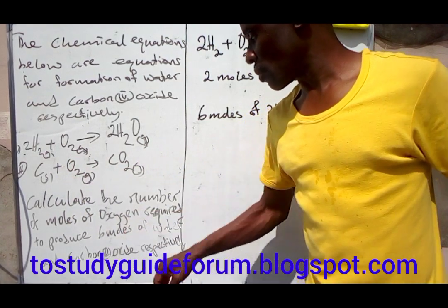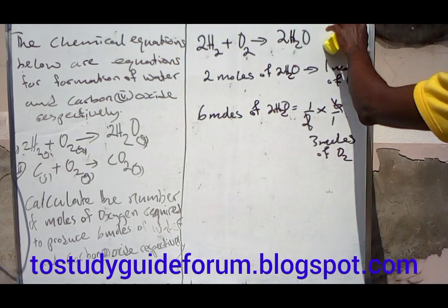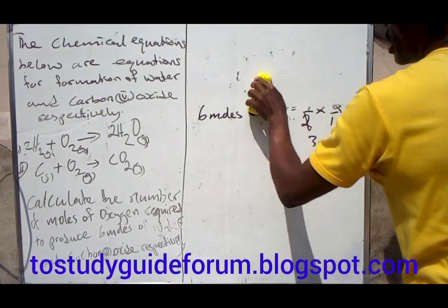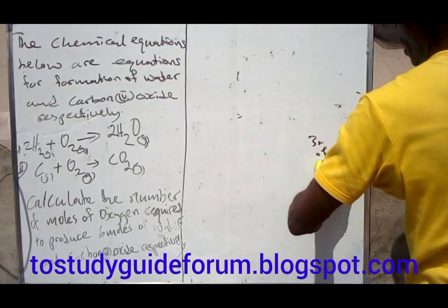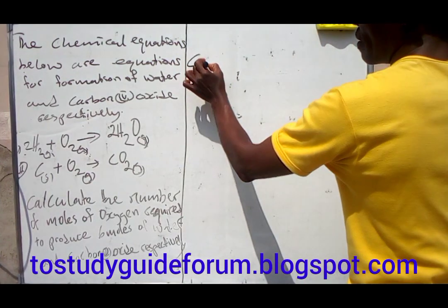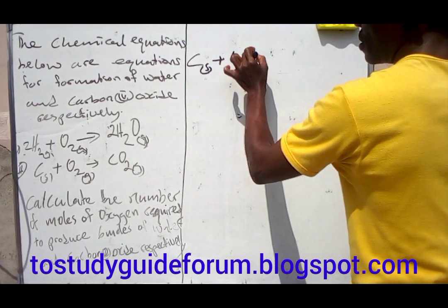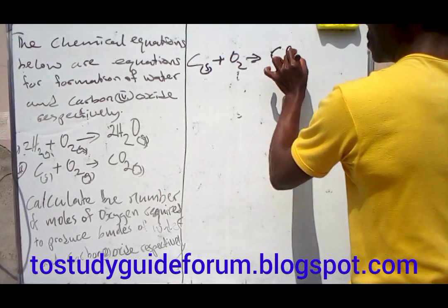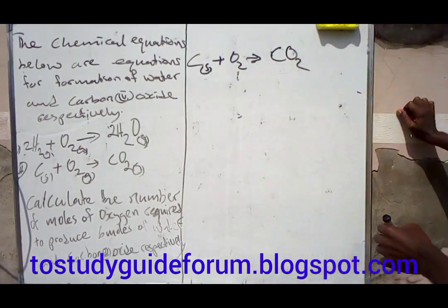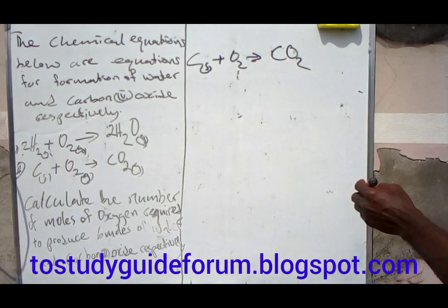For the carbon dioxide, we still need the balanced chemical equation. From this balanced chemical equation, we have one mole of carbon dioxide.